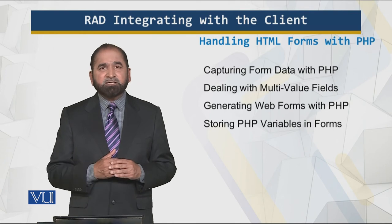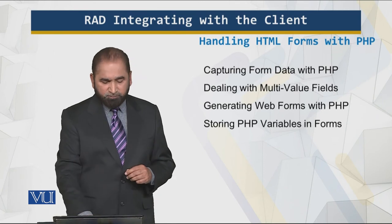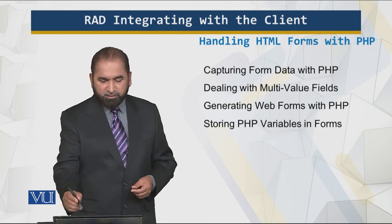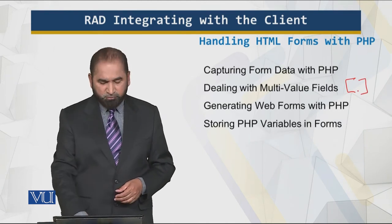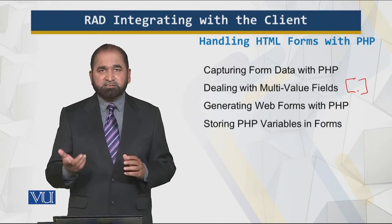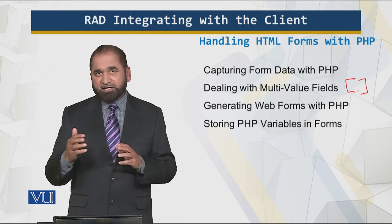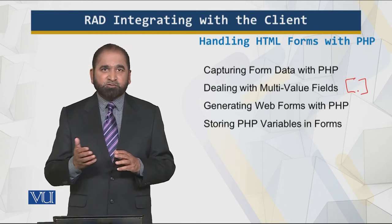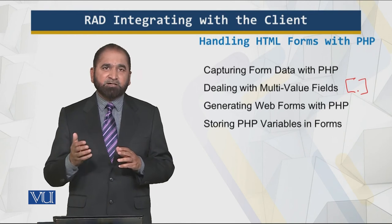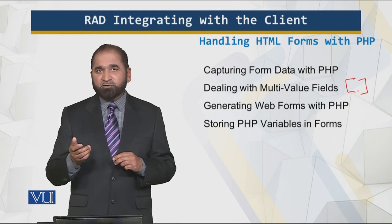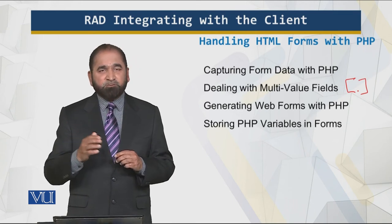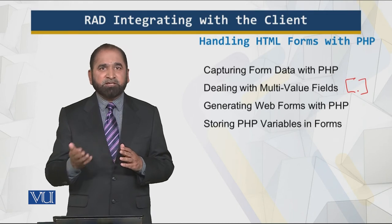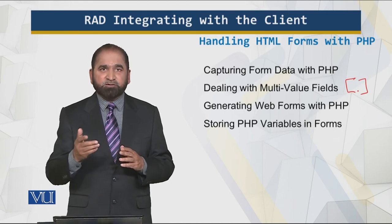Now we have to capture data from these forms, and there are different ways of processing that data. For multiple values, one can put square brackets after the variable name. The PHP engine knows what is coming and generates a global array. Instead of a single value, the global array will contain those multiple values — the variable name, label, and contents of the variable from the form.